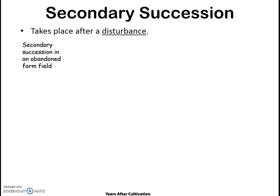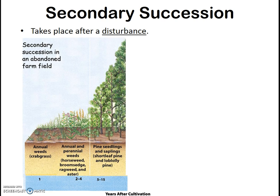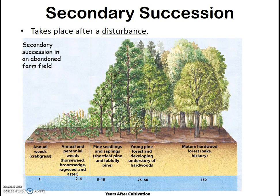An example of secondary succession often described in environmental science textbooks is one that occurs in an abandoned farm field. The farm field had a very consistent community for a long time because the farmer was farming it in a certain way. Once that field was abandoned — the disturbance here being the abandonment — annual weeds start to grow, then maybe some perennials, some small shrubs and trees, and eventually some more shade-tolerant trees are able to move in. At each step, the existing community alters the ecosystem in such a way that other species are able to come in and out-compete the existing community, and thus the community changes.